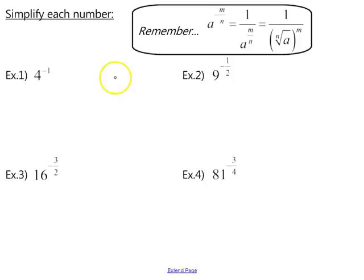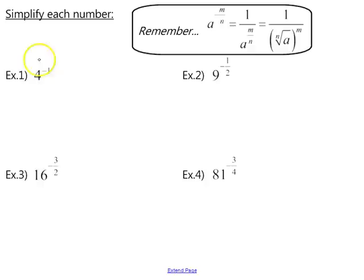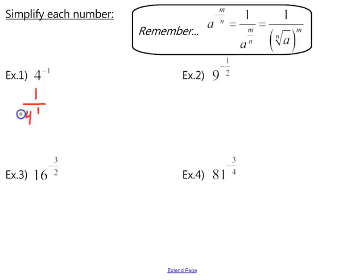Here we also want to simplify expressions with negative exponents. If the number is on top of the fraction it moves to the bottom so the exponent becomes positive. If the number is on the bottom it moves to the top. So for example 1, we take 4 to the negative 1 and move it to the bottom: 1 over 4 to the positive 1. Since 4 to the first power is just 4, the final simplified answer is one fourth.